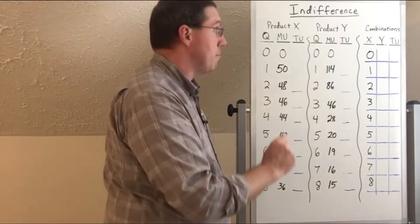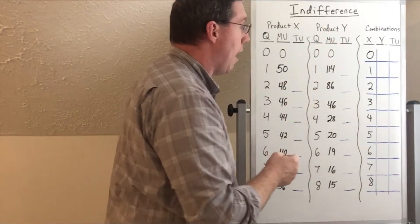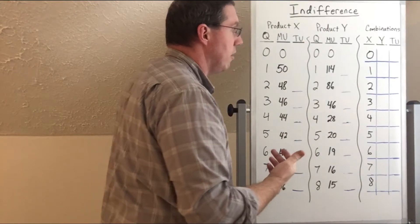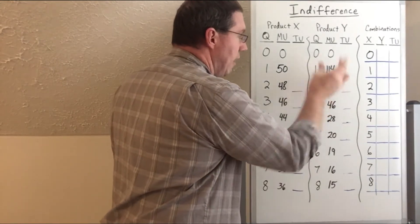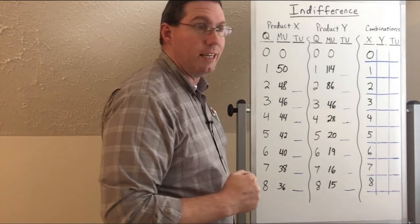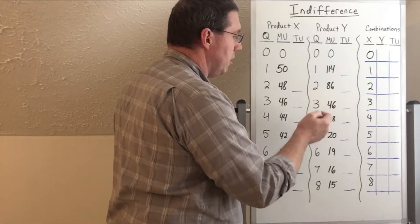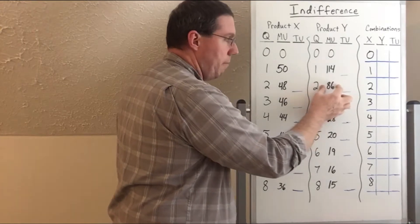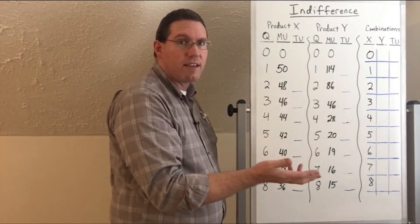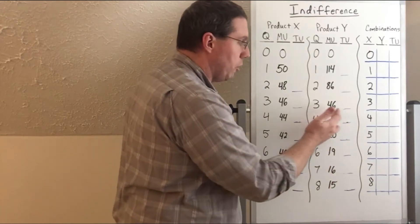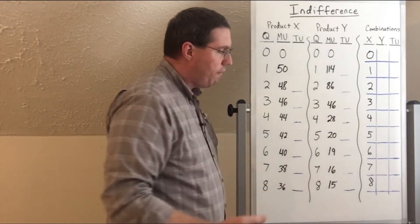We see the exact same thing over here in product Y. The first unit of product Y — let's say this is our pizza — we eat one slice and we get a lot of utility: 114. The second slice still gives us a good bit, but it drops down to 86. The third only gives us 46, then 28, 20, 19, 16, 15.